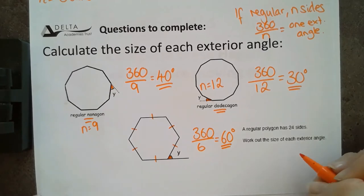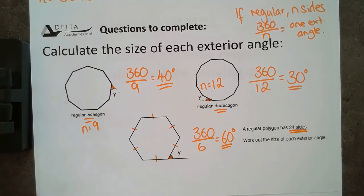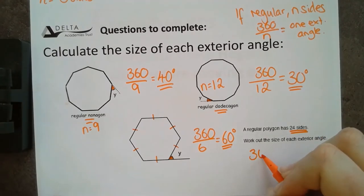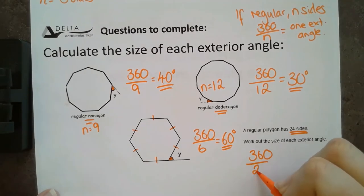Last but not least, we've not got a diagram for this one. I've got a 24-sided polygon and I need to work out the size of the exterior angles. So, I'm going to do 360 divided by 24.